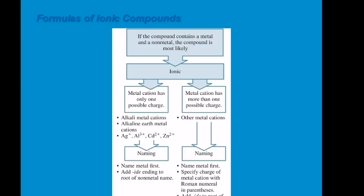Now let's look at the diagram showing the rule for naming a certain formula — the nomenclature. If the compound contains a metal and a non-metal, the compound is most likely ionic. We have two types of ionic: one that possesses only one possible charge, and one where the metal cation has more than one possible charge.